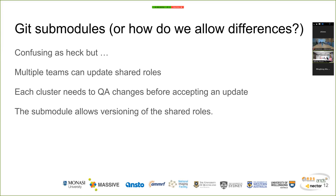We do use Git submodules, which gets confusing for most people because Git defines this as a mechanism for bringing in dependencies. It's really useful to say we have a set of roles common to all our clusters, and each cluster depends on that. It allows QA where the upstream roles' most recent version might change, but you might not have QA ready for your cluster. It takes a bit of a learning curve even for highly technical people, but it is exactly the solution you want for a scenario with shared and non-shared code.